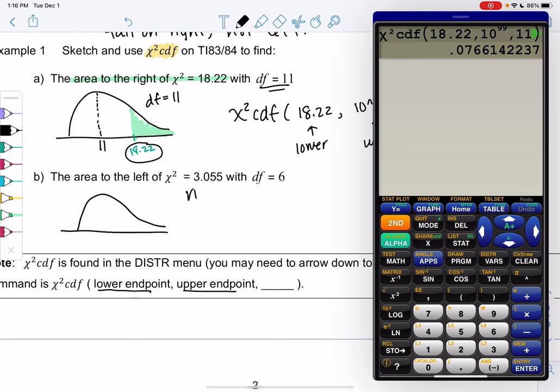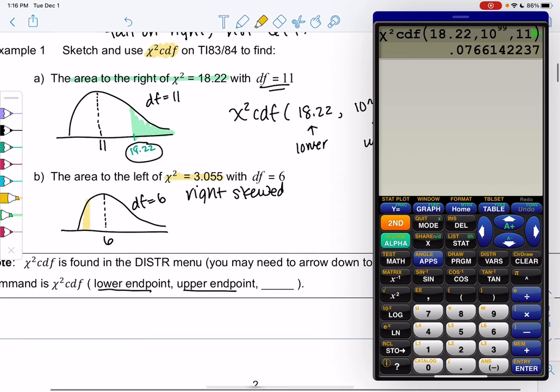So we'll draw a right skewed curve because chi-square is always right skewed. Degrees of freedom 6 should be around the peak, and then we want to find the area to the left of 3.055. So I just have to approximate where that is, but it's somewhere on the left of 6, and then we'll do chi-square CDF.